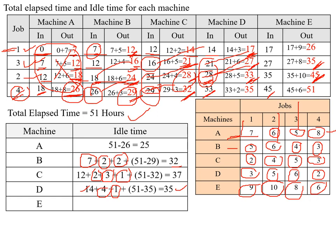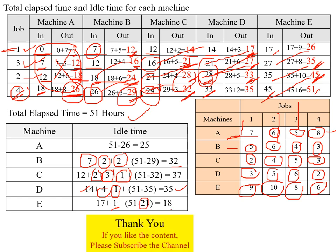For machine E, the initial waiting time is 17, then a 1-hour gap, then gaps at 35 and 45, and the final out-time is 51. The total elapsed time for all jobs processed through all 5 machines is 51 hours. Thank you.